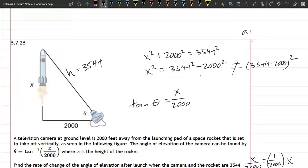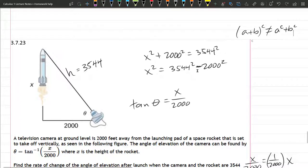That's called freshman's dream. a plus b to the c power is not equal to a to the c plus b to the c. So don't make that mistake here. Let me erase all this wrong stuff. All right, so that's x squared. So let's go ahead and plug that value in.